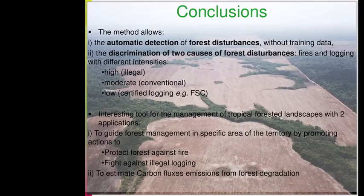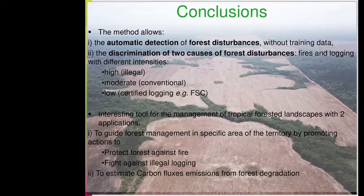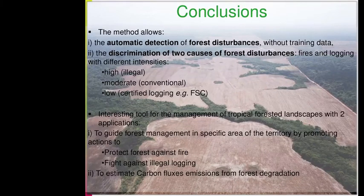In conclusion, the method allows: first, the automatic detection of forest disturbances without training data; second, the discrimination of two causes of forest disturbances — fire and logging — with different intensities: high for illegal, moderate for conventional, and low for certified logging. This method is an interesting tool for the management of tropical forested landscapes with two applications: first, to guide forest management in specific areas by promoting actions to protect forests against fire and fight against illegal logging; and second, to estimate carbon flux emissions from forest degradation.